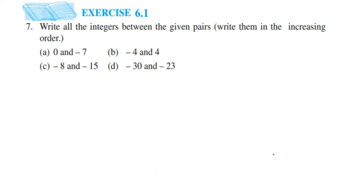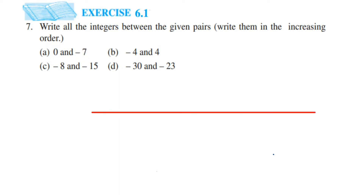The first question is 0 and minus 7. Before we begin, let me explain the number line. Suppose this is a number line. 0 is a number which doesn't have any sign. Towards the right hand side we get positive integers, and towards the left hand side we get negative integers. As we go towards the right hand side on the number line, the value increases.